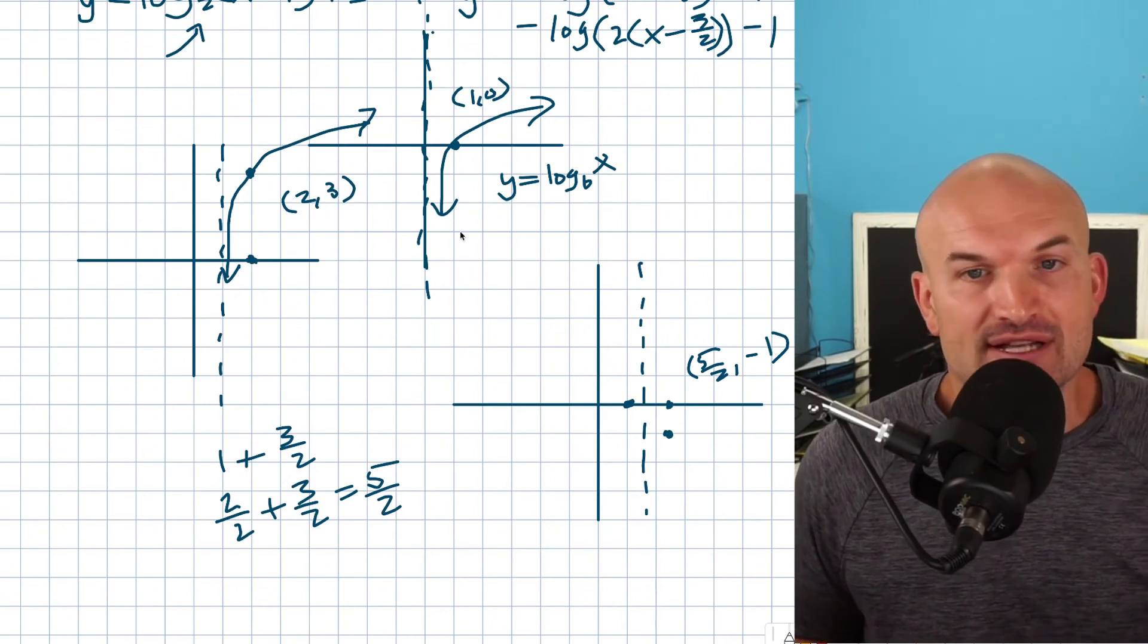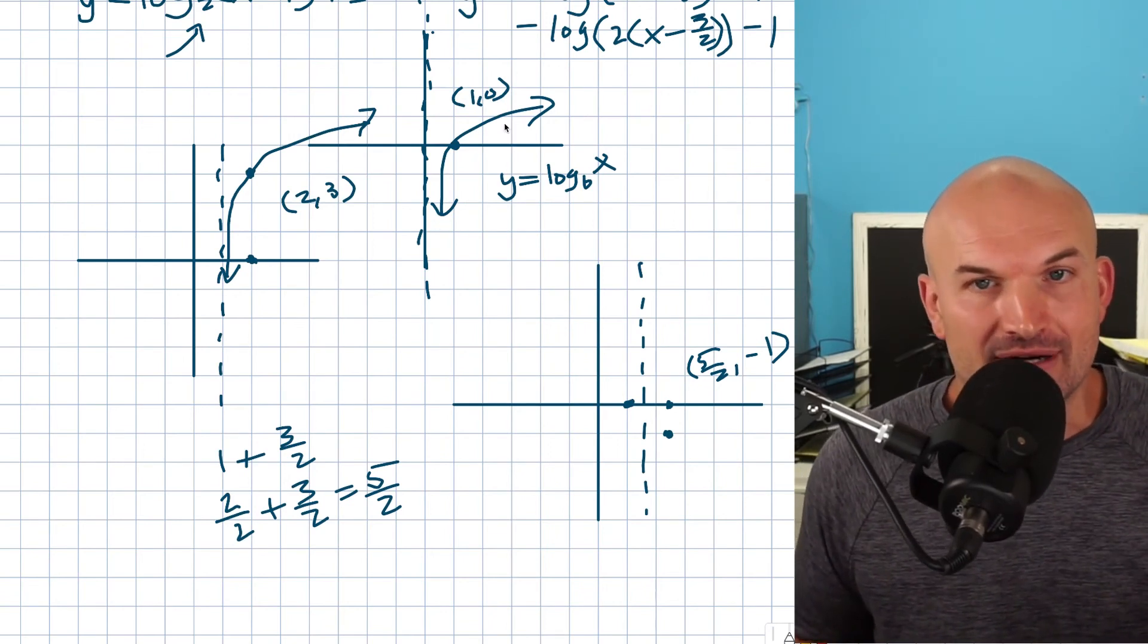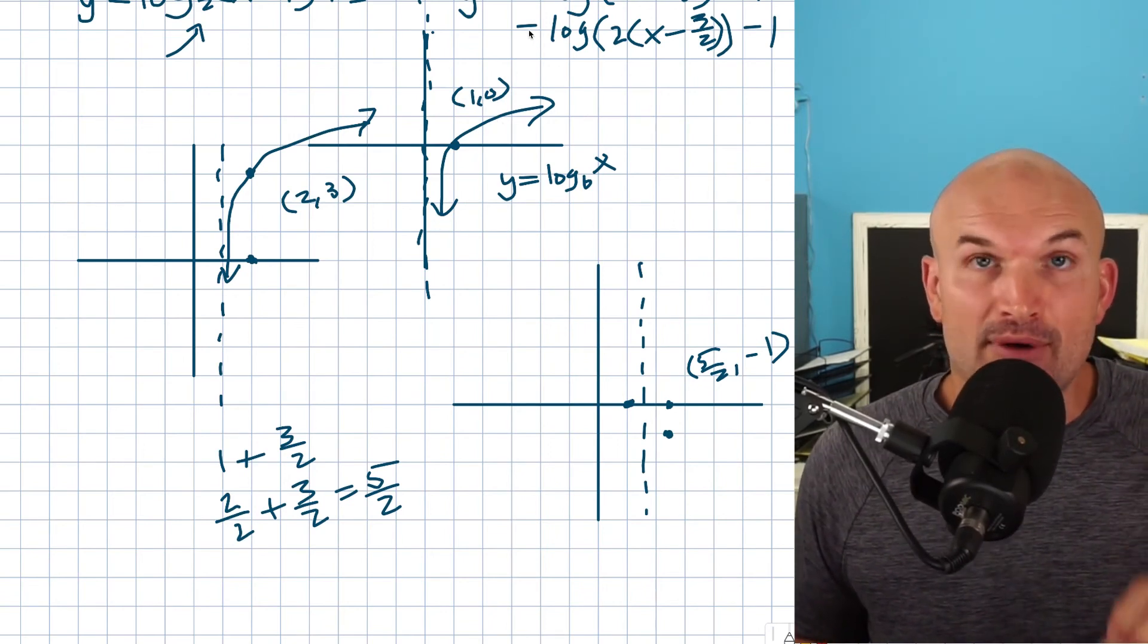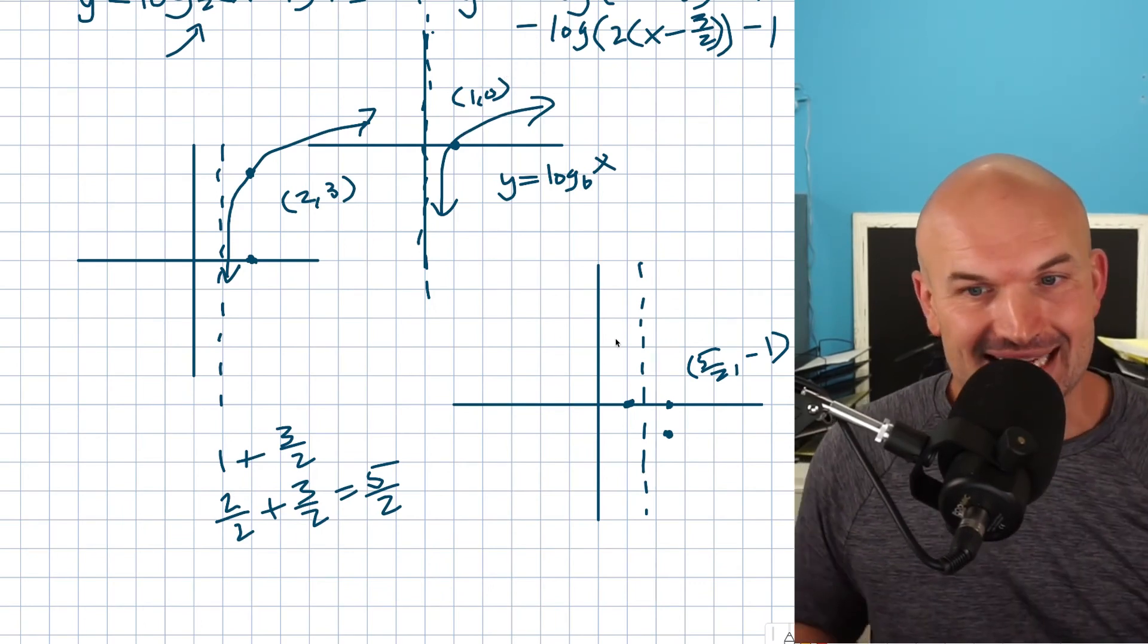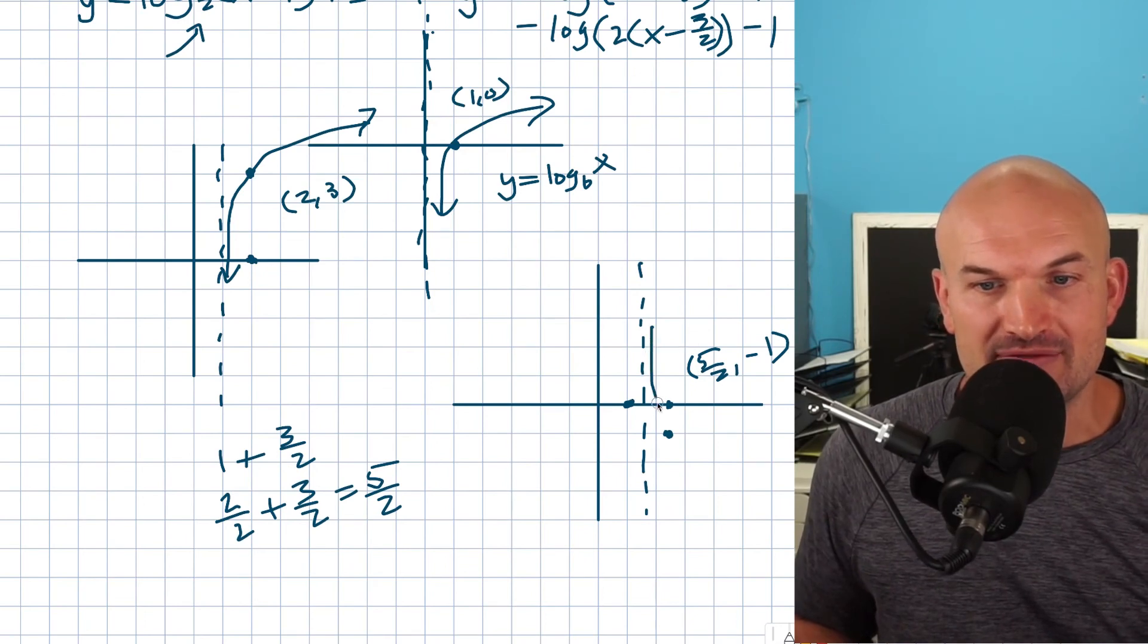The big mistake that students will make is they'll say, oh let's just go ahead and re-graph what we have here. But again, remember what happened is when we multiply by negative, that reflected the graph about the x axis. So when you reflect the graph about the x axis, the graph is now going to take shape of something like this.